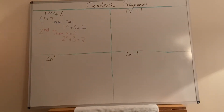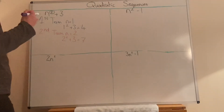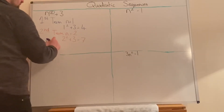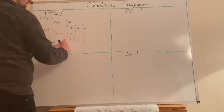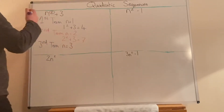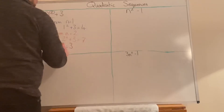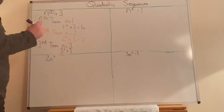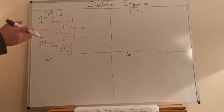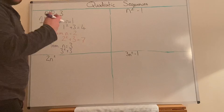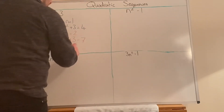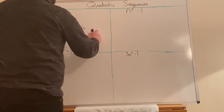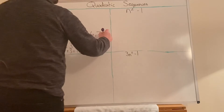The last one we're going to do is the third term, because remember we're only finding the first three terms. The third term — n equals 3. So, we're going to take out the n and put in the 3 in its place. What we end up with is 3 squared plus 3. Now, 3 squared does not mean 3 add 3 — 3 squared means 3 times 3. 3 times 3 is 9, plus 3 is 12. So our sequence is 4, 7, 12.